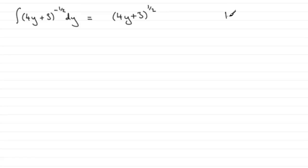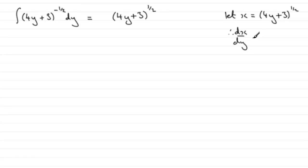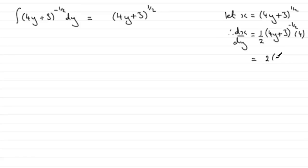Let's suppose we say let x equal 4y plus 3 to the power half. If we differentiate this with respect to y, we get dx by dy, and we need to use the chain rule. We get a half out the front, drop the power on the bracket by 1 to get 4y plus 3 to the minus a half, and multiply by the differential of the inside, which is 4. So we end up with half of 4, which is 2, multiplied by 4y plus 3 to the power minus a half.